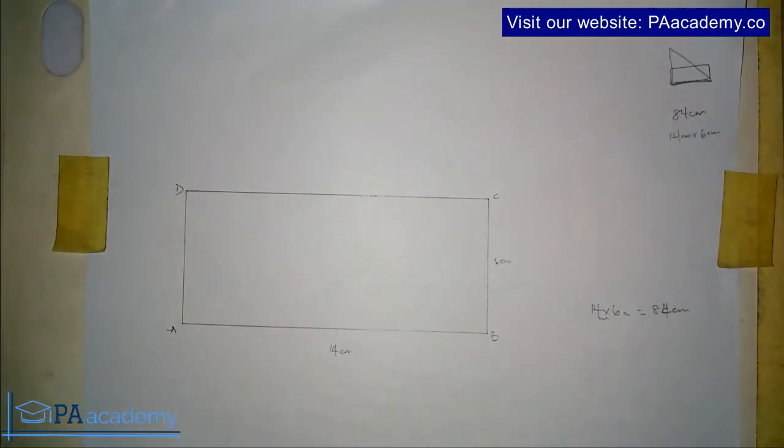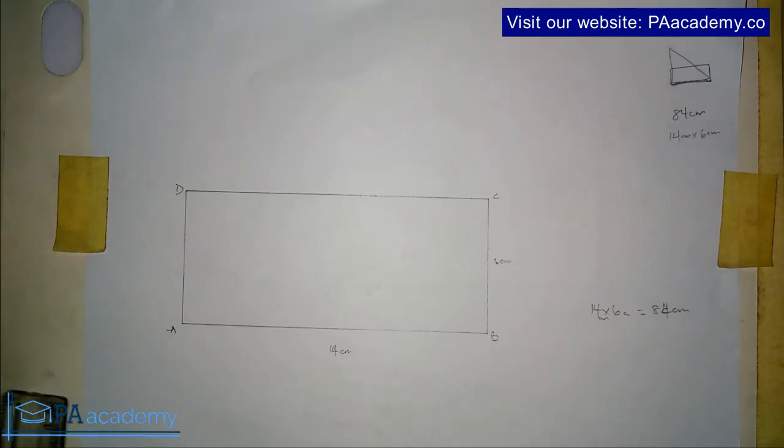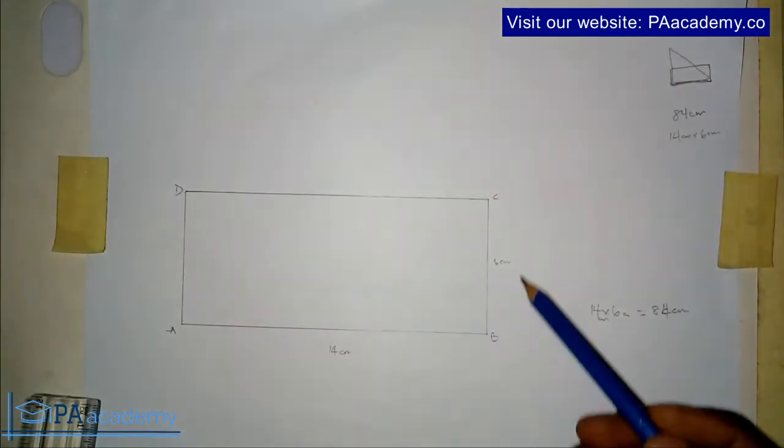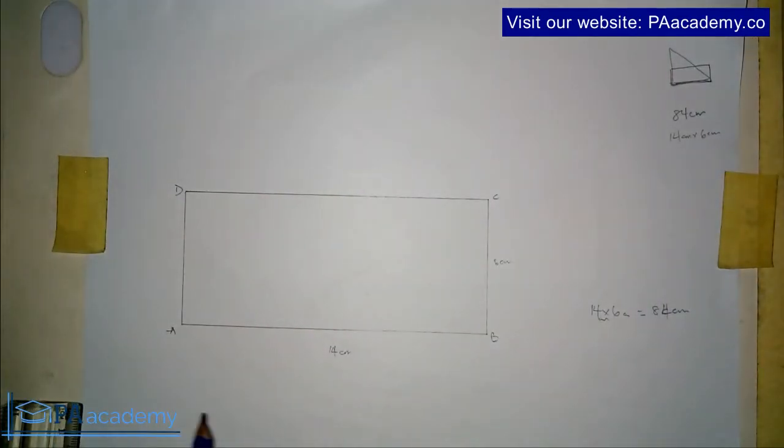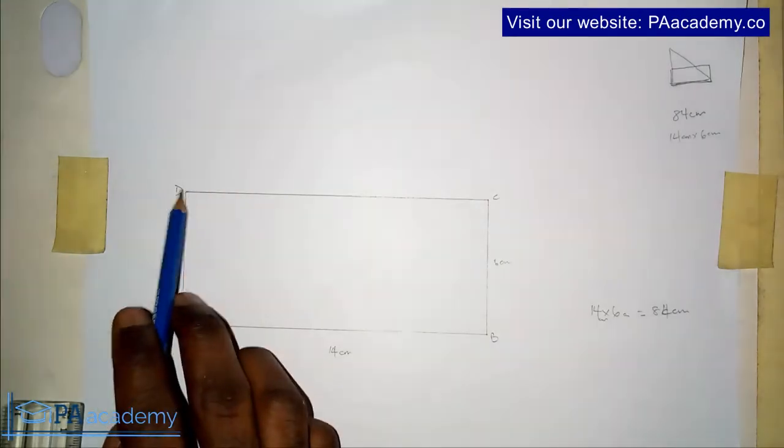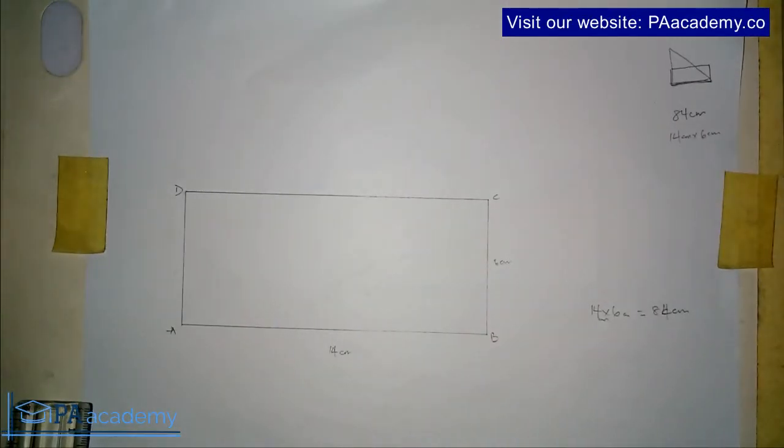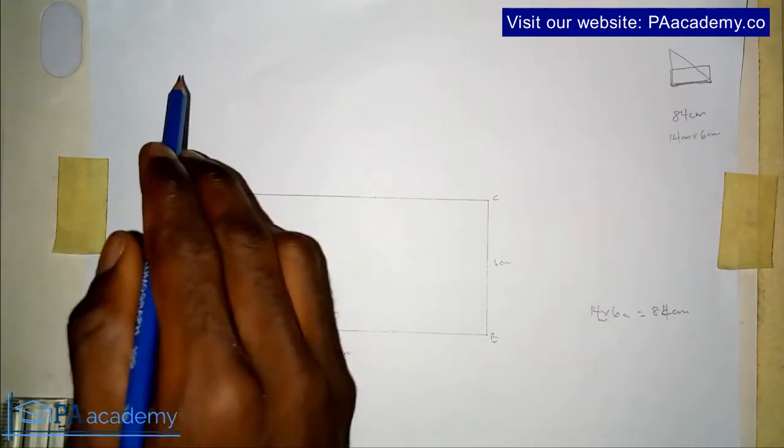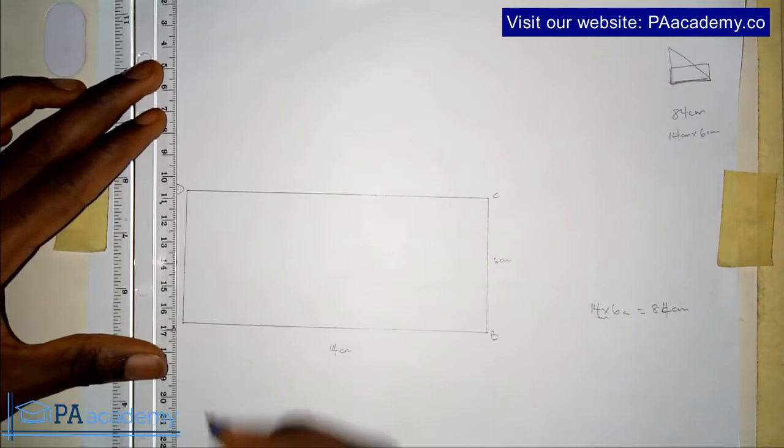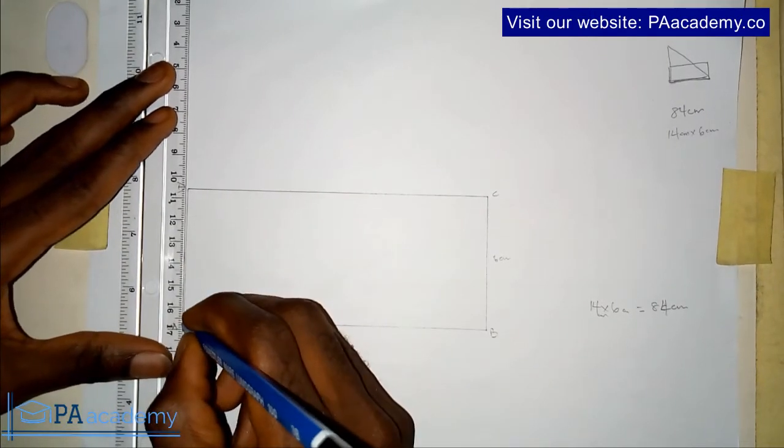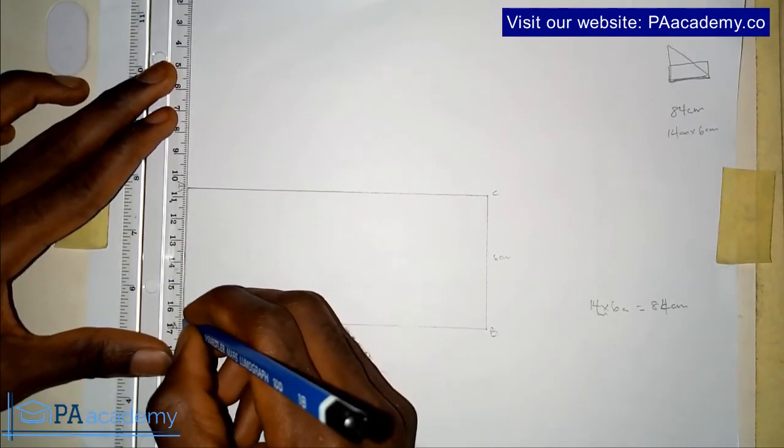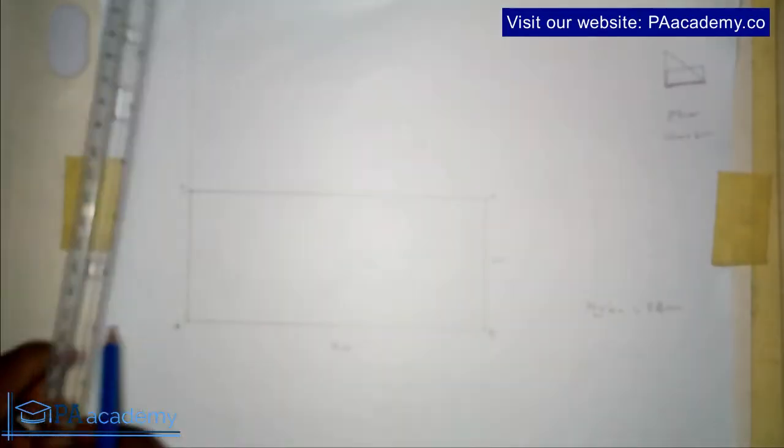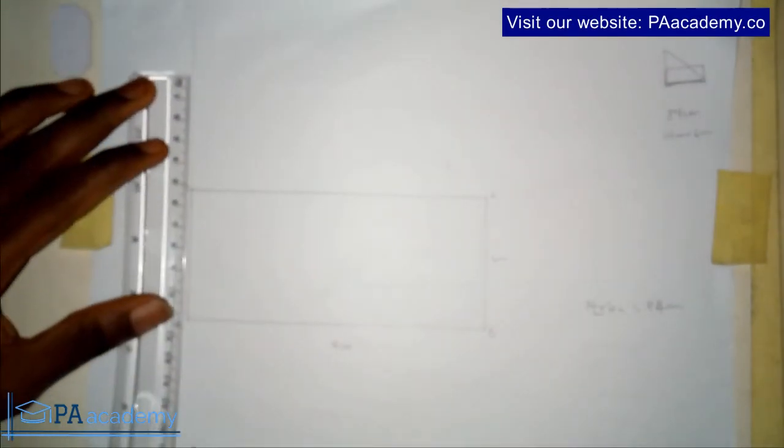So now that we have our rectangle, how do we now go ahead to construct a triangle with the same base and the same area? So the triangle will also have a base of 14 centimeters on the same base, and their area will be the same thing. So for this rectangle we are having 14 times 6, that's 84 cm².